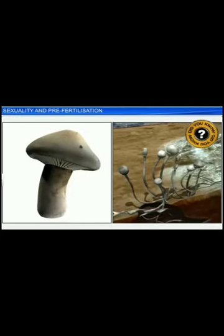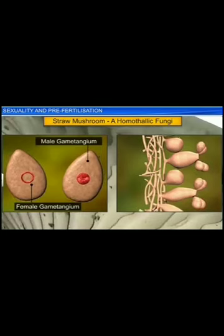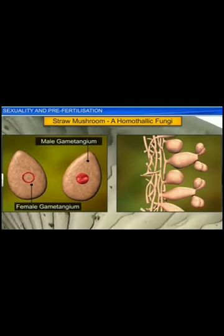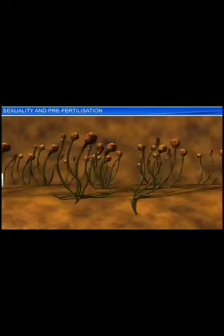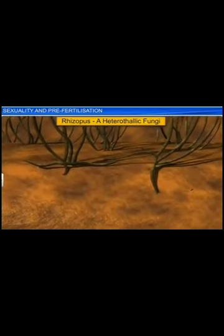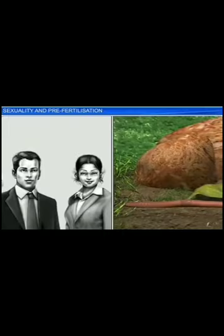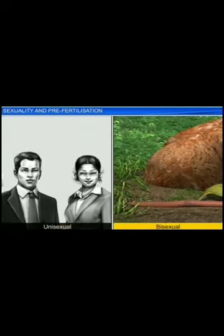Did you know that we come across bisexual and unisexual organisms even in fungi? Bisexual fungi such as the straw mushroom bear both the male and female gametangium — the plus and the minus mating type — on the same thallus. Hence, these types of fungi are also known as homothalic. This is in contrast to heterothalic fungi such as rhizopus, which bears the male and female gametangium — that is, the plus and minus mating type — on different thalli. Apart from fungi, we also see unisexual and bisexual organisms in the animal kingdom.